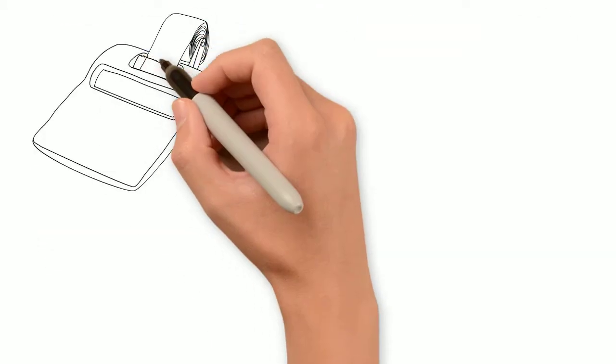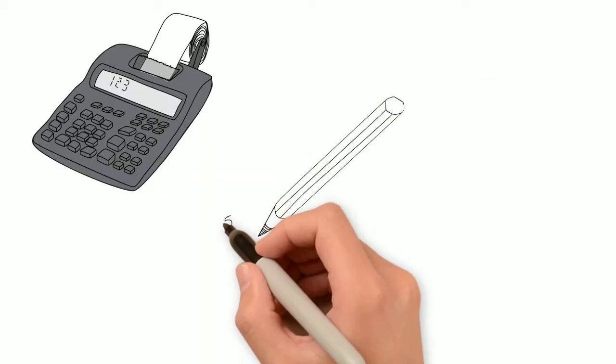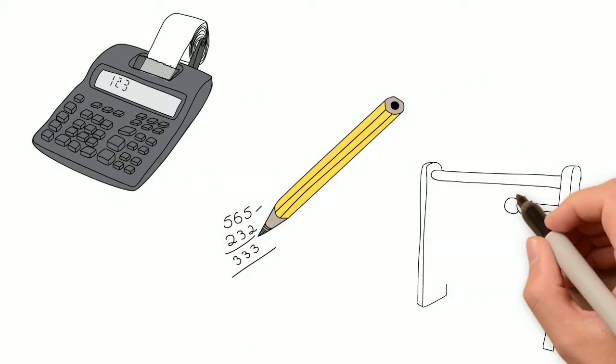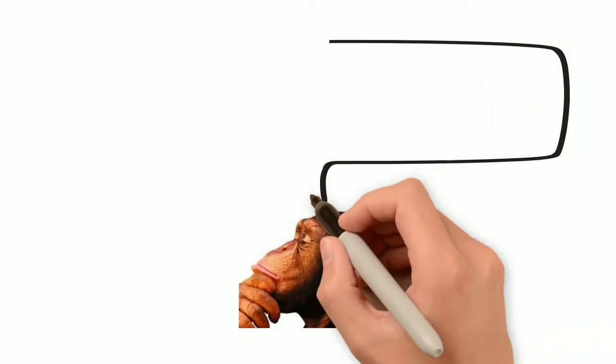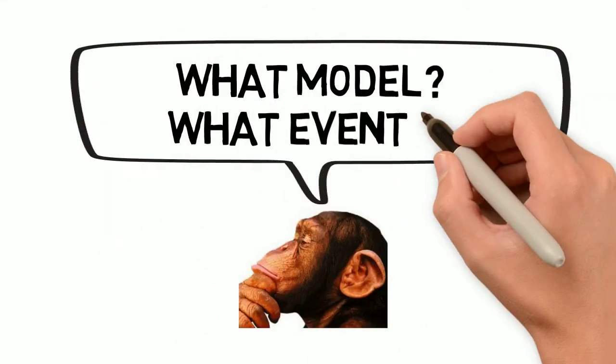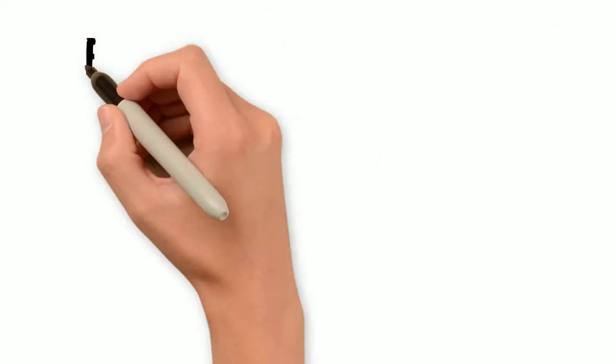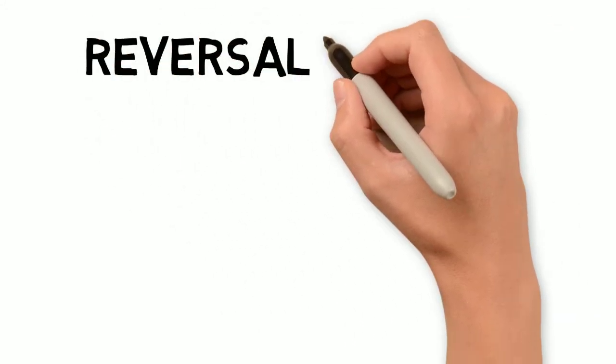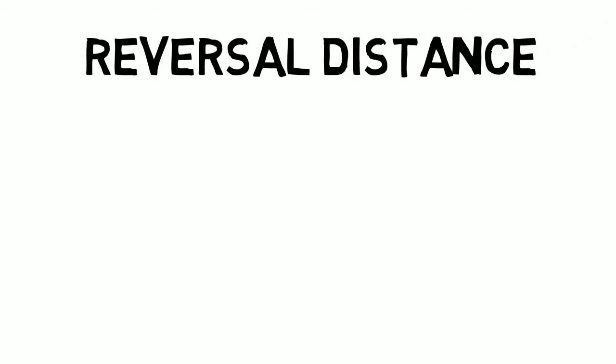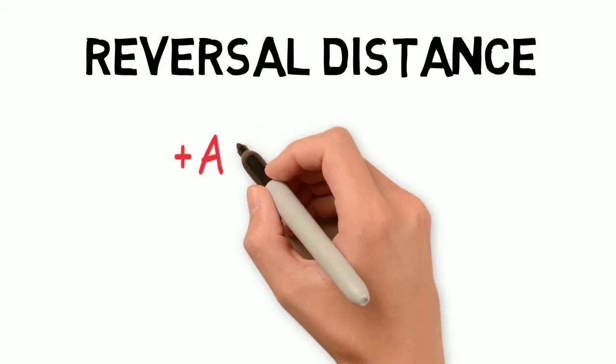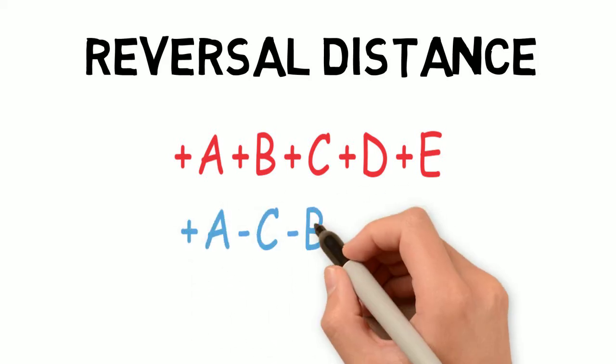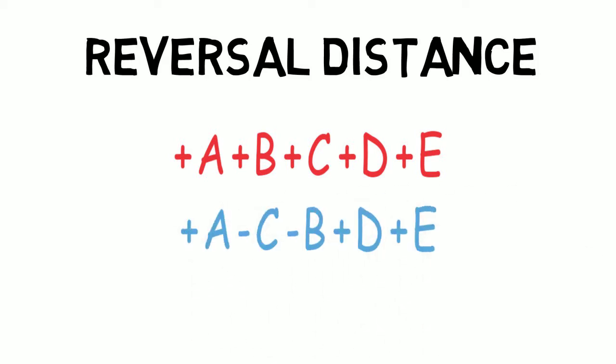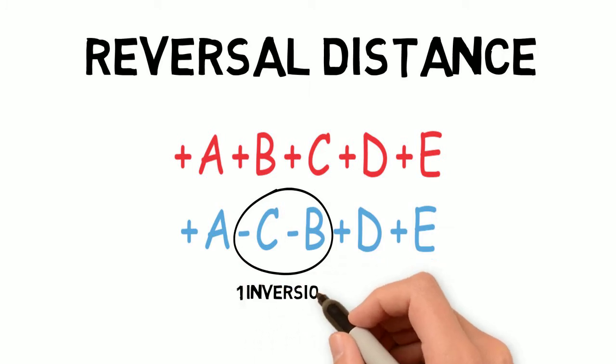There are different ways to calculate distances between two genomes, which are often going to be represented as gene orders. It all depends on the chosen model and the evolutionary events allowed on it. For example, one can calculate the reversal distance when comparing two gene orders. The reversal distance corresponds to the minimum number of inversions, or reversals, that are needed to transform one gene order into the other.